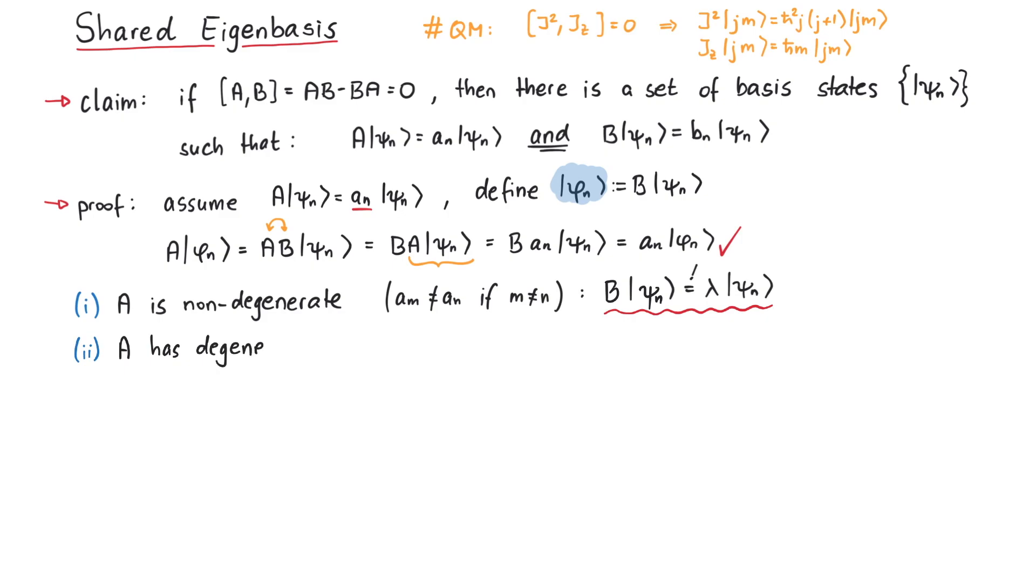In the second scenario, A has a degenerate spectrum. Let us assume that both psi_m and psi_n have the same eigenvalue a_m. This means that both phi_m and psi_n also have the same eigenvalue a_m.